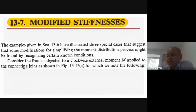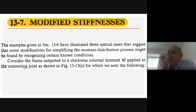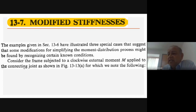From section 13.7 of the reference book you will see modified stiffnesses. The examples given in section 13.6 have illustrated that in three special cases, some modifications for simplifying the moment distribution process might be found by recognizing certain known conditions. Now we start to find the relation between the stiffness and modified stiffness for these three cases.